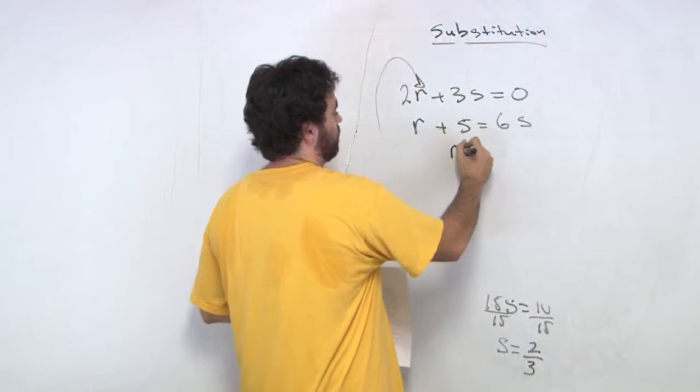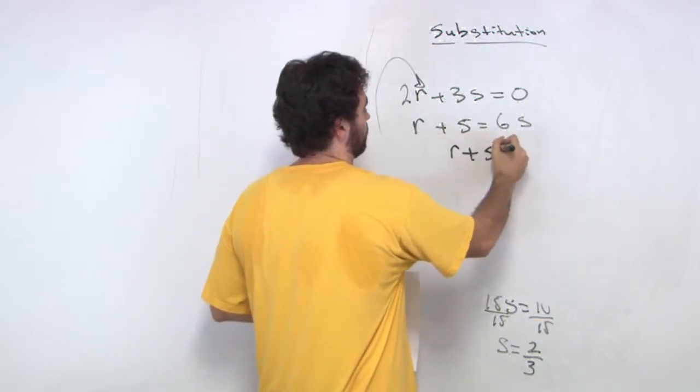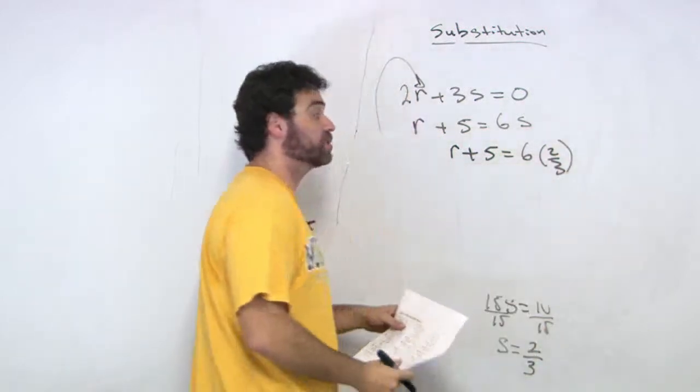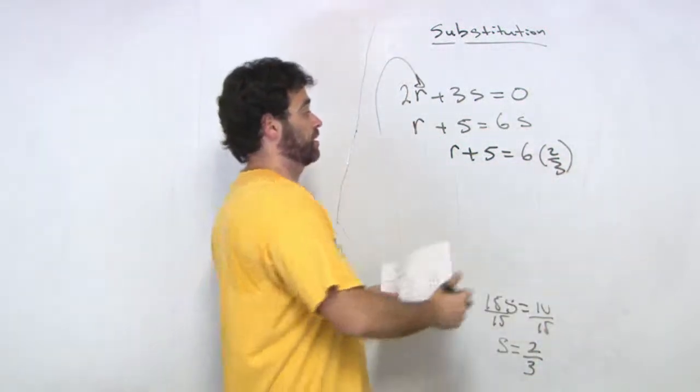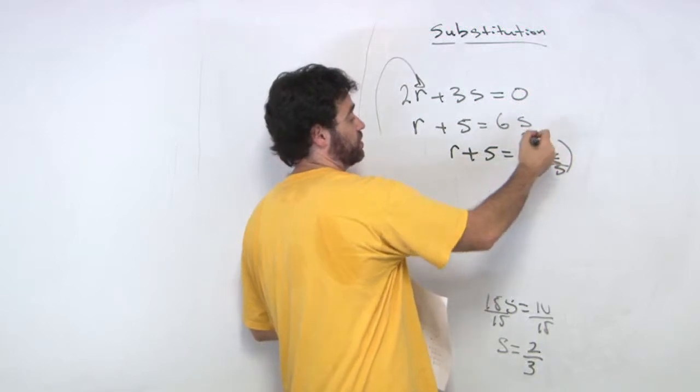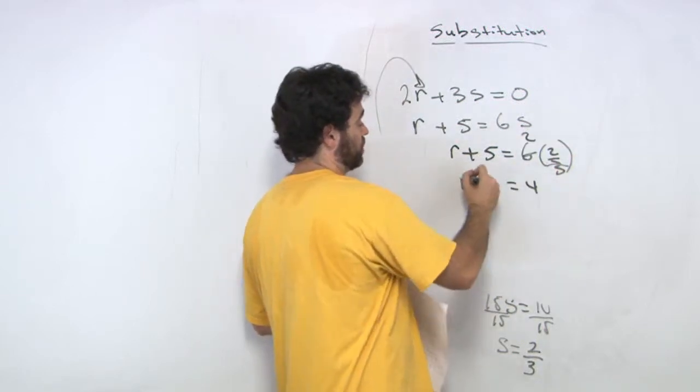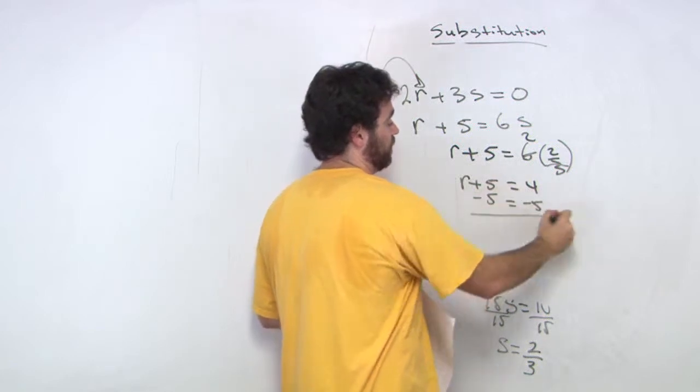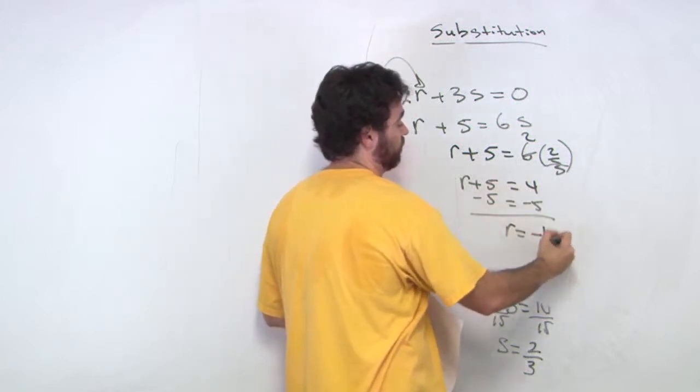We plug it into the bottom equation. So I get r plus 5 is equal to 6 times 2 thirds. See, it's not so bad, because that cancels out, that becomes 2. So we get 4 is equal to r plus 5, minus the 5, and we get r is equal to negative 1.